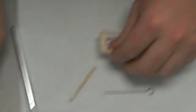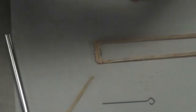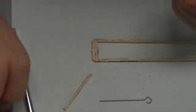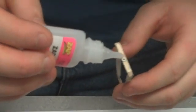Now that it's in there, you want to take some CA glue. Hopefully this glue will come out. Oh good, it's coming out. And you want to put it around the outside, just a dab on the outside, on the top and the bottom.